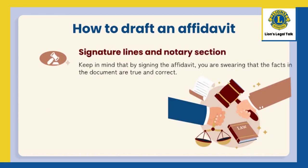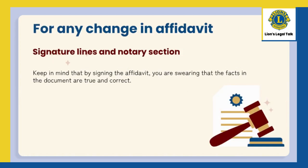To ensure that the affidavit is easily understood, use simple language and make short sentences. You will need to include the signature lines and notary section. By signing the affidavit, you are swearing that the facts in the document are true and correct. For any changes or alterations to an affidavit, changes should be authenticated by the initials of the officer before whom the affidavit was taken.